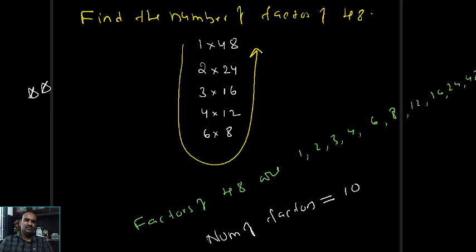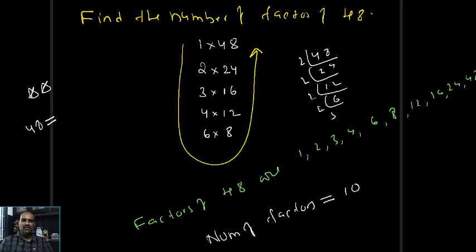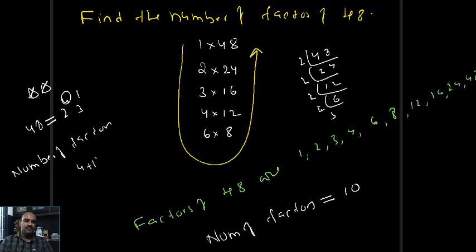By using the formula: 48 = 2^4 × 3^1. According to the formula, the number of factors equals (4+1)(1+1) = 5 × 2 = 10. The formula gives 10, and practically we also got 10.